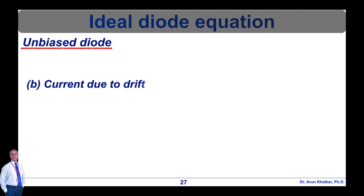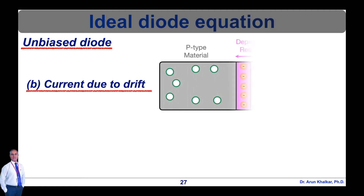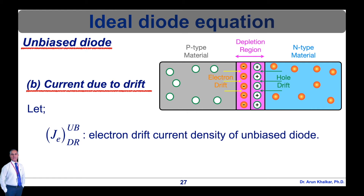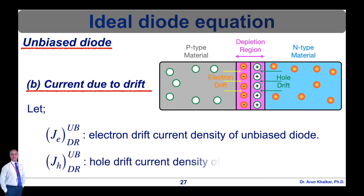For the current due to drift, due to the potential barrier, electrons reaching the edge of the junction on the p side are accelerated by the electric field into the n region. Similarly, holes reaching the edge of the junction on the n side are accelerated into the p region. Using special notations, let J_E_DR_UB denote the electron drift current density of the unbiased diode, and J_H_DR_UB denote the hole drift current density of the unbiased diode.